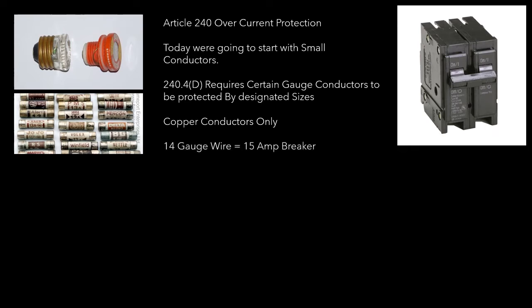When we're dealing with 14 gauge wire — regardless if it's Romex, THHN, THW, it doesn't matter — unless we're using some of the exceptions we're gonna talk about in a little bit, you're gonna be required to have that on no more than a 15 amp breaker. 14 gauge wire, 15 amp breaker, unless we're using some of those exceptions.